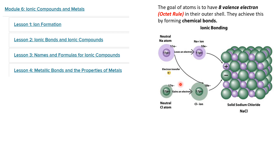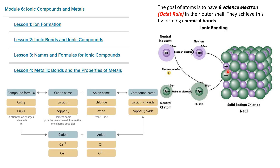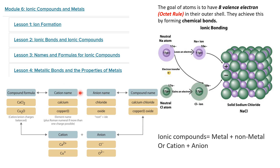So Na becomes Na⁺ and this electron that is lost is gained by another atom, like Cl, which becomes Cl⁻ — and thus an ionic bond is formed. We learned about ionic bonds and compounds: the formulas, how to write the chemical formula for an ionic compound, how to name ionic compounds, how to name cations and anions. An ionic compound is made from a metal and a non-metal.